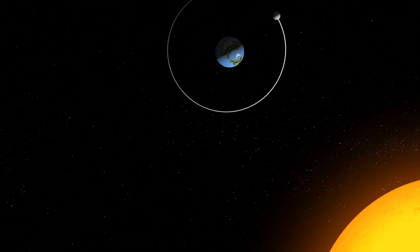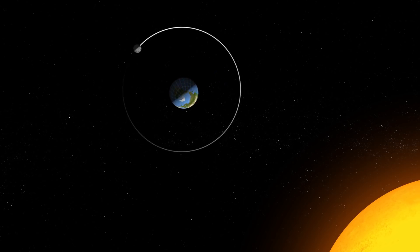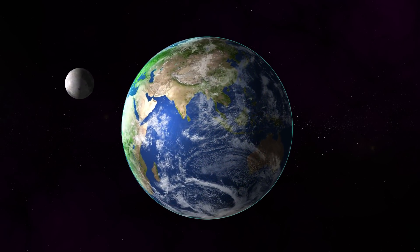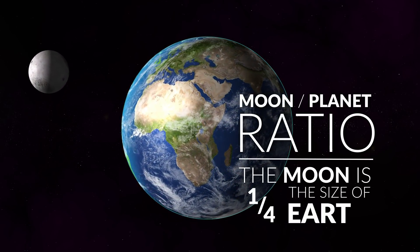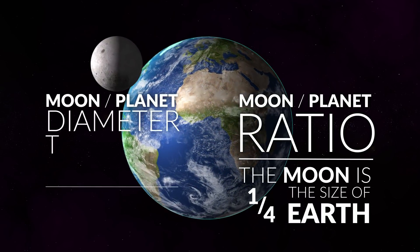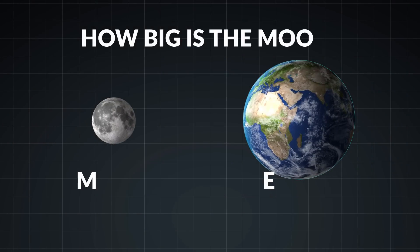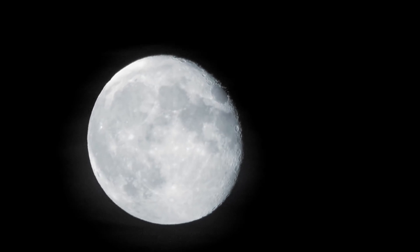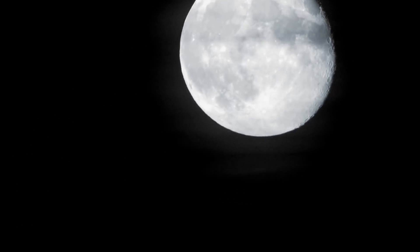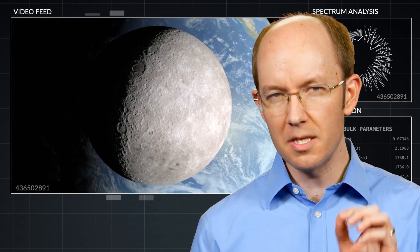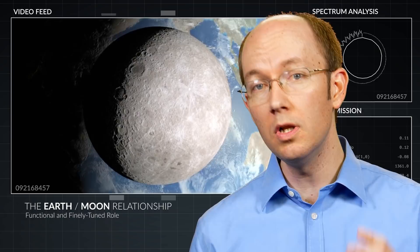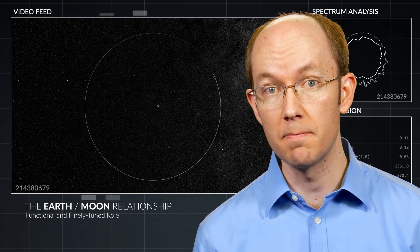Within the solar system, the Earth-Moon relationship is rather unique. In comparison to the other planets and their moons, our moon has the largest ratio of moon-to-planet size and diameter-to-orbital distance. What this means is that the moon has both a larger physical size in relation to Earth and a larger apparent visual size in our sky than any other moon-planet system. These simple relationships provide the foundation for the moon's functional and finely tuned role as Earth's nearest companion.